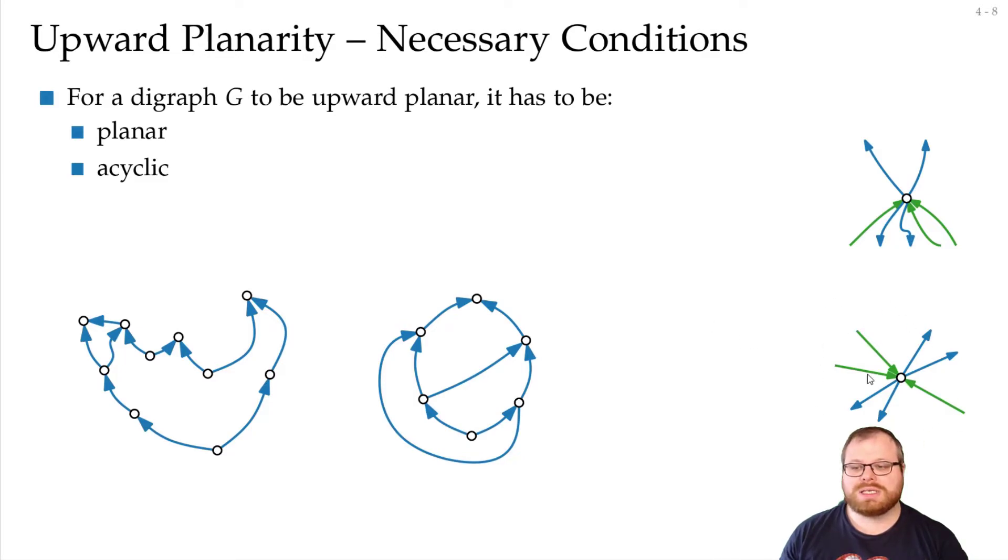And such a vertex is called not bimodal. On the other hand, this one here is a bimodal vertex. And bimodal means just that the outgoing edges and the incoming edges form two disjoint intervals. Here we have this interval for the green incoming edges and this for the blue outgoing, so they overlap. Here they don't.